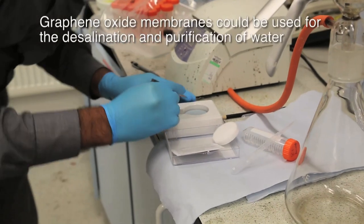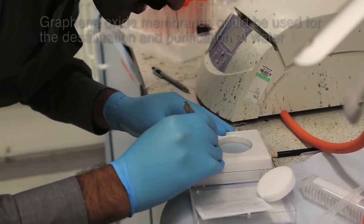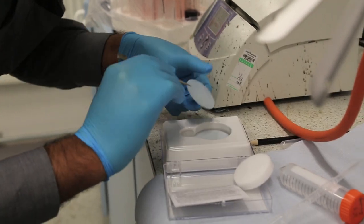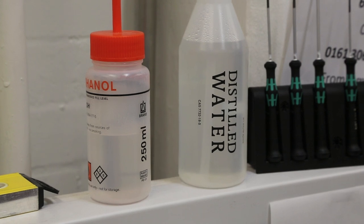My name is Rahul Nair. My area of research is graphene-based membranes. So graphene oxide is super permeable to water, which means there is no resistance or barrier for water molecules to evaporate through graphene oxide.